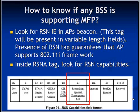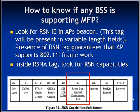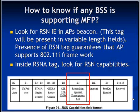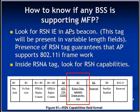Look for the RSN IE or RSN information element in the AP's beacons. In the beacon frame, the RSN IE will be present in the tagged parameters in a variable-length field. The presence of the RSN tag guarantees that the AP supports the 11i framework or WPA2 framework. Inside this RSN tag, look for RSN capabilities. In RSN capabilities, bit 7 or B7 is the robust management frame protection bit. If this bit is set, then the AP is supporting 11w architecture. If this bit is not set or equals 0, then the AP is not supporting MFP, and management frames will not be protected.